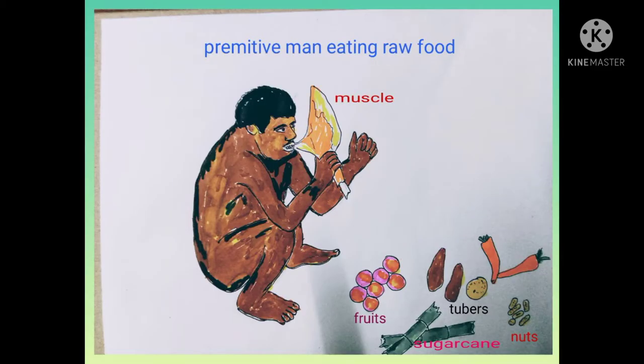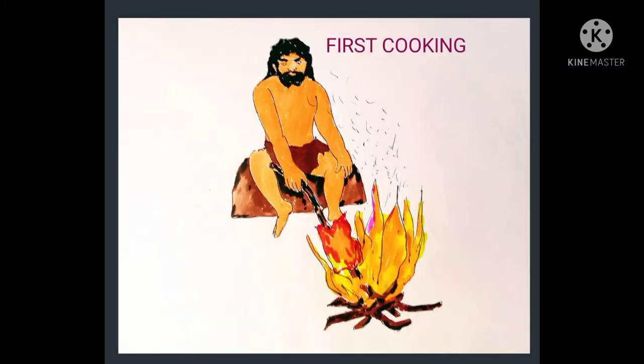Primitive man used to eat raw food like animal flesh, fruits, tubers, nuts, sugarcane, etc. Here, the primitive man is cooking his food — animal flesh — in the flame.